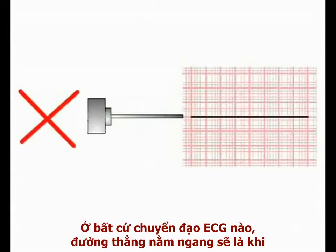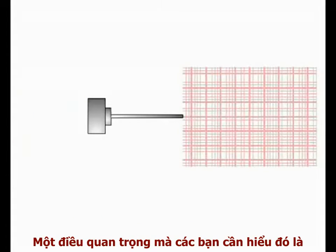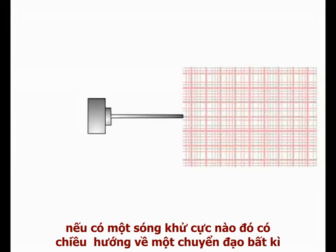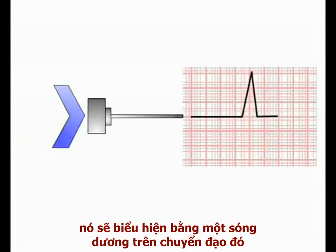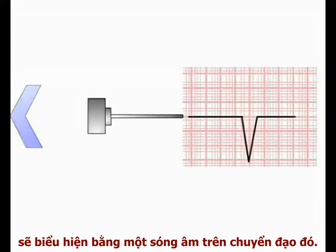In any ECG lead, the flat line recorded on the readout when no net current is flowing is termed the isoelectric line. It is very important to realise that all of the ECG leads on the ECG machine are set up in such a way that depolarising current moving towards a lead produces a deflection on the ECG paper above the isoelectric line — a positive deflection — while depolarising current moving away from the lead produces a deflection below the isoelectric line — a negative deflection.